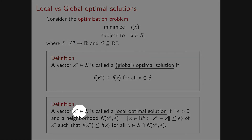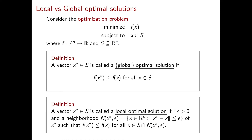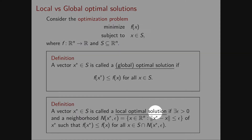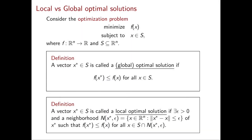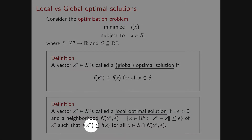On the other hand, a feasible vector x* is called a local optimal solution if it is the best feasible vector in a small enough neighborhood of x*. Formally, there exists an epsilon greater than 0 and a corresponding neighborhood N(x*, ε), defined as the set of points in R^n at distance at most ε from x*, such that the cost of x* is less than or equal to the cost of x for any x that is feasible and in N(x*, ε).